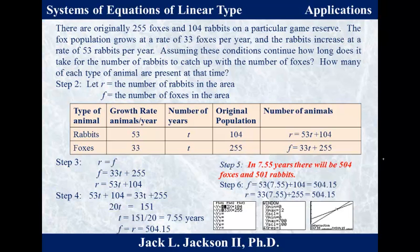Notice: use suggestive letters — R for rabbits, F for foxes — and identify what they are. So those are two of my equations. The third equation is that R must equal F, because we want the rabbits to catch up. They start below but are growing at a faster rate, so eventually they will catch up. I have three equations and three unknowns, so there's a good chance of a single solution. Substituting gives 53T + 104 = 33T + 255.